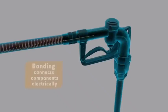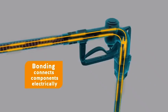Bonding uses a conductive material, such as wire, to connect components such as the pump, hoses, and nozzles in a fuel delivery system. This prevents sparks by keeping the charge between components the same.